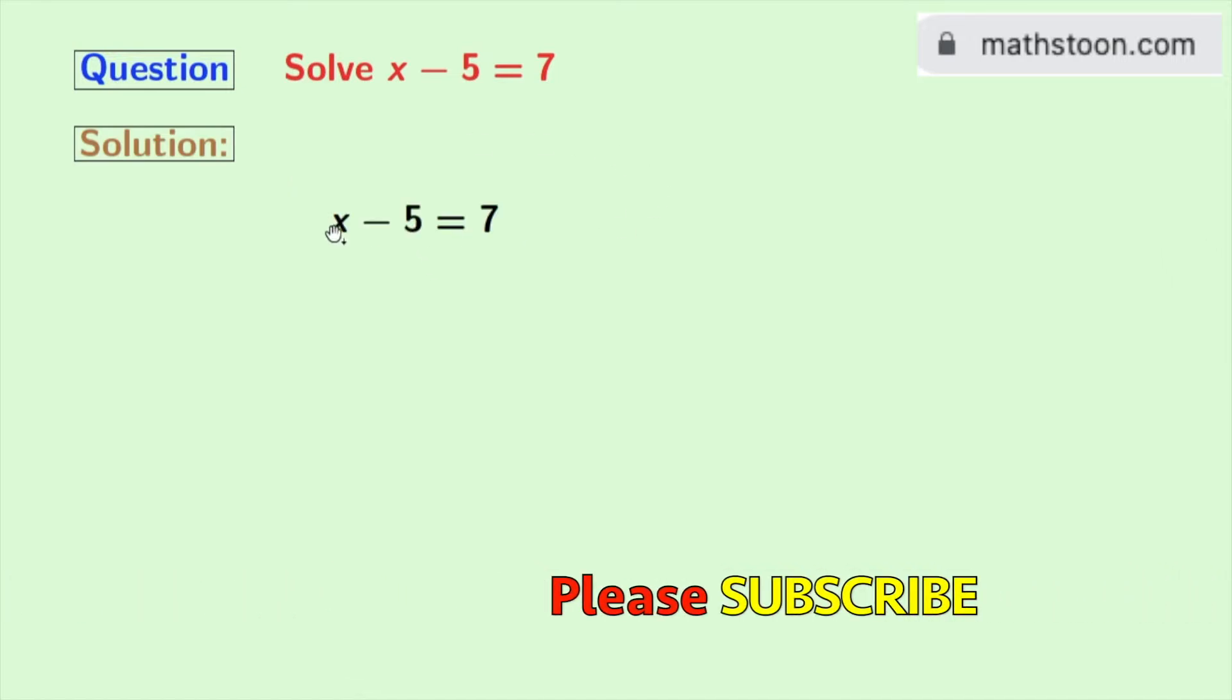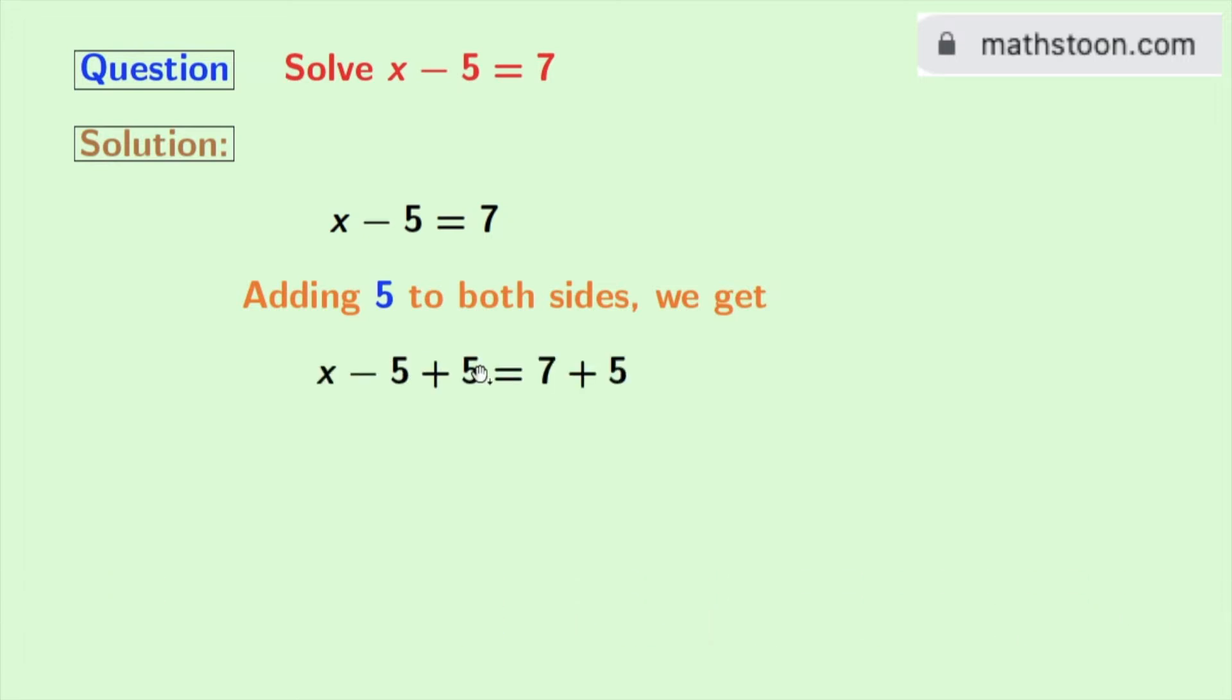Our given equation is x minus 5 is equal to 7. Now we will add 5 to both sides. Doing that, we get x minus 5 plus 5 is equal to 7 plus 5.